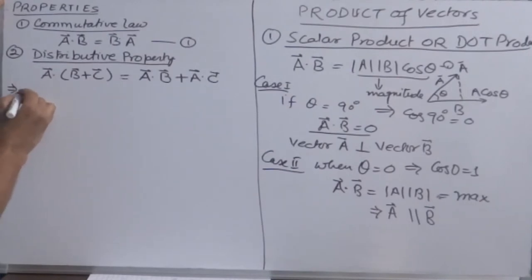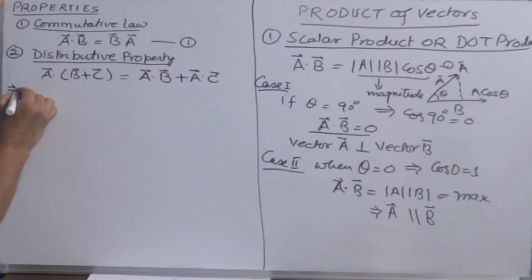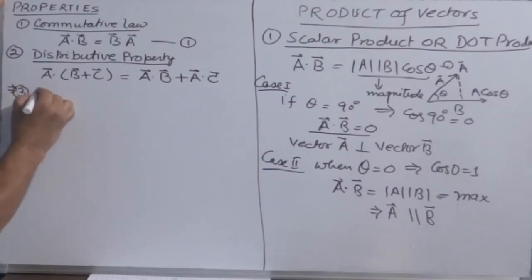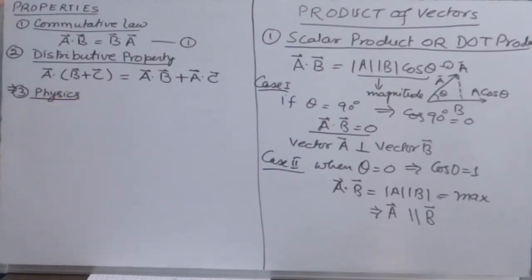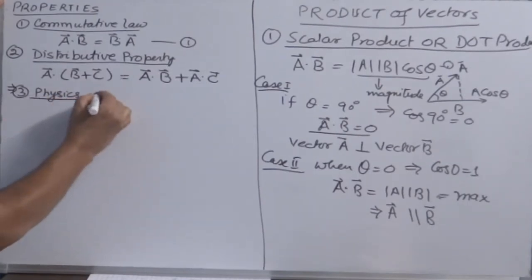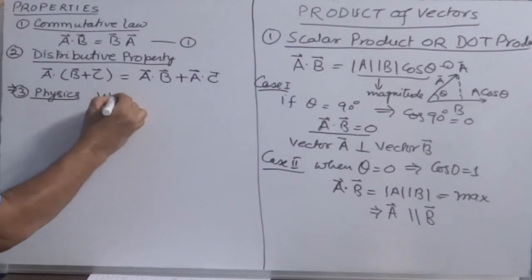In physics, physical quantities obtained by dot product include: Number 1 is work — W equals F·s.